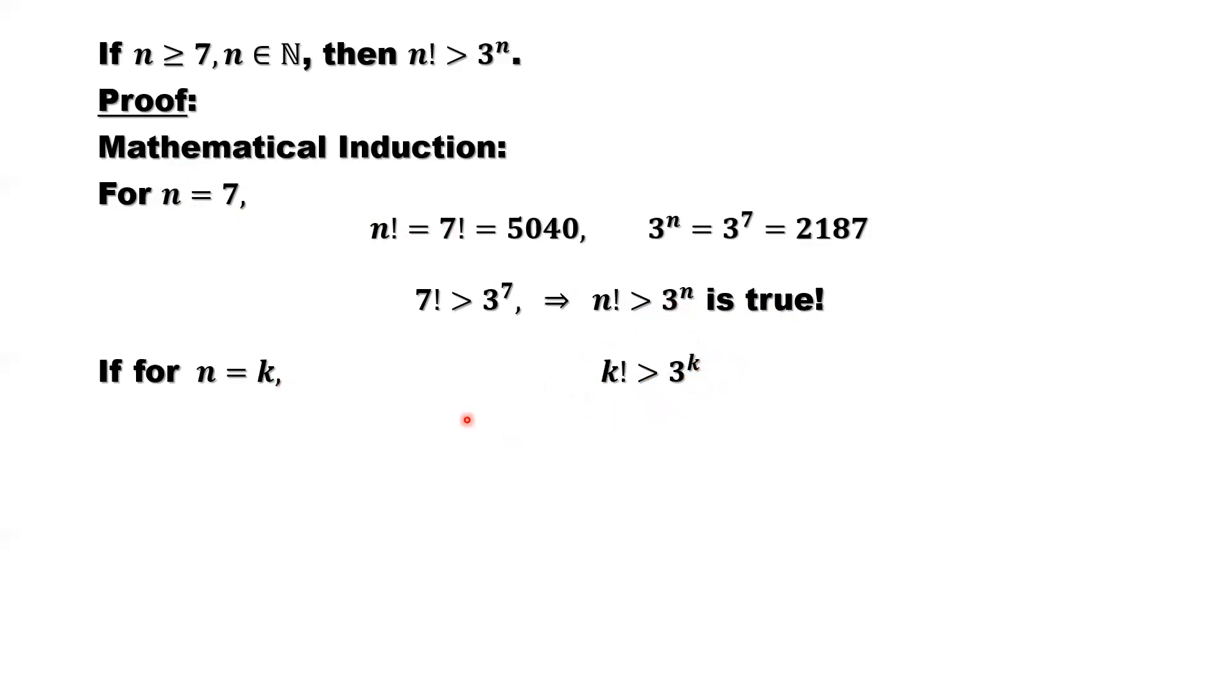Can you prove n equals k plus 1? This result is also true. What does this mean? That means when n equals k plus 1, k plus 1 factorial is bigger than 3 to the power k plus 1 using this result.